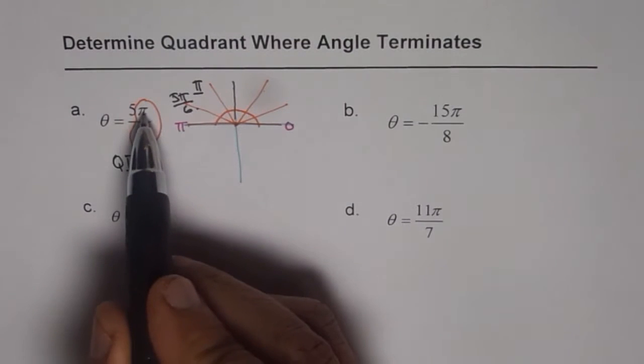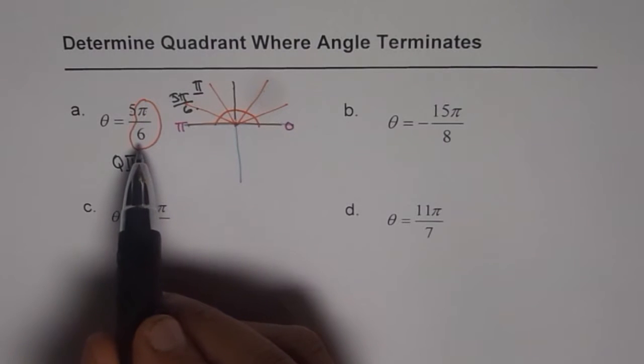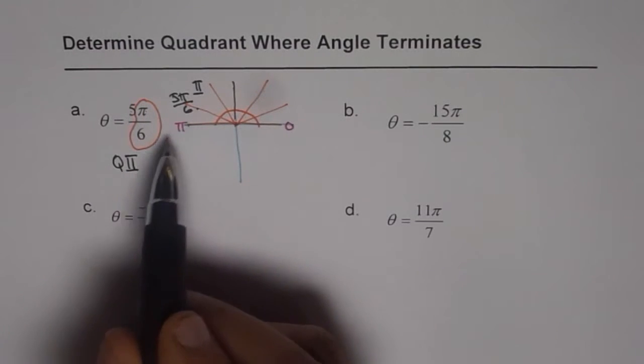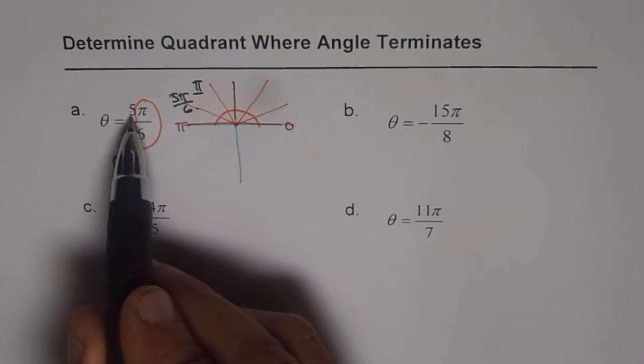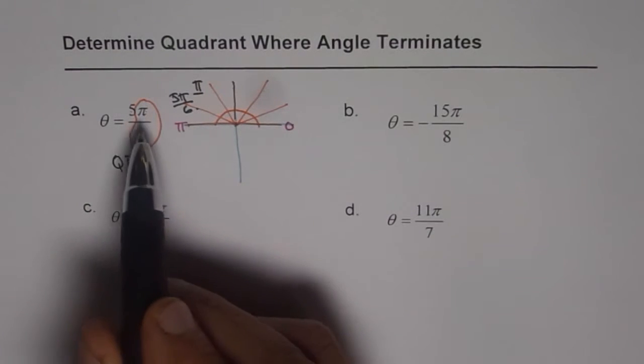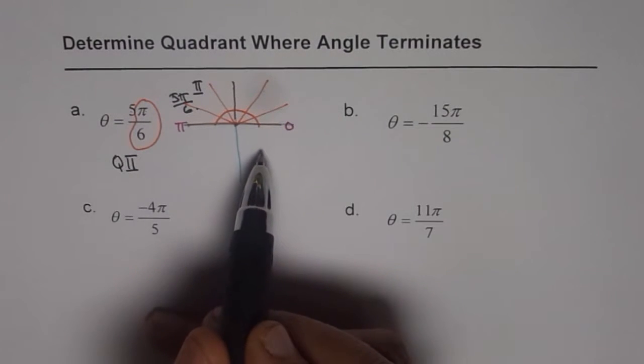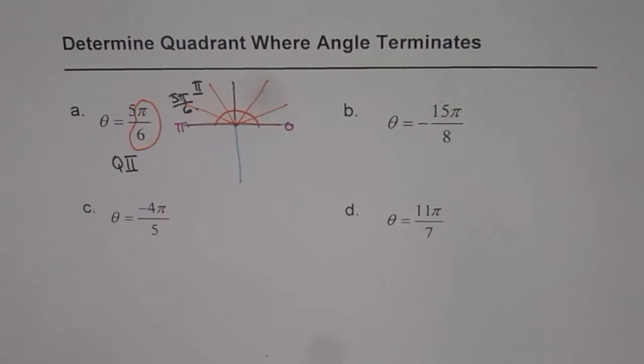Now your pi is divided into 6 portions. 5 is 1 less than 6. That means in quadrant 2, correct? If it was more, let us say it was 7, it would land up in quadrant 3. It was close to 12, let us say 10 or 11, then it would land up in quadrant 4. That is how you figure out, correct? Now let's do the next one.